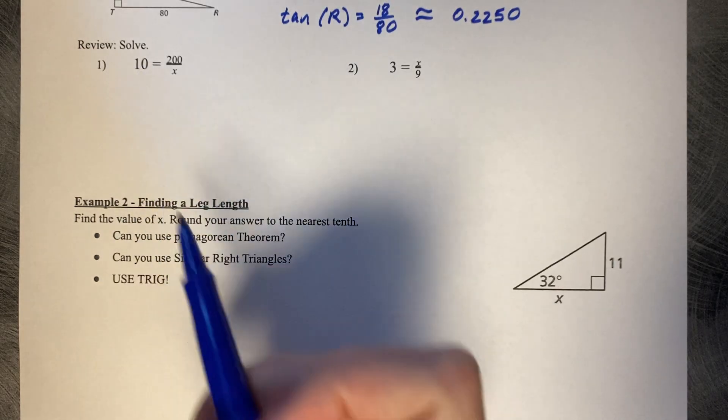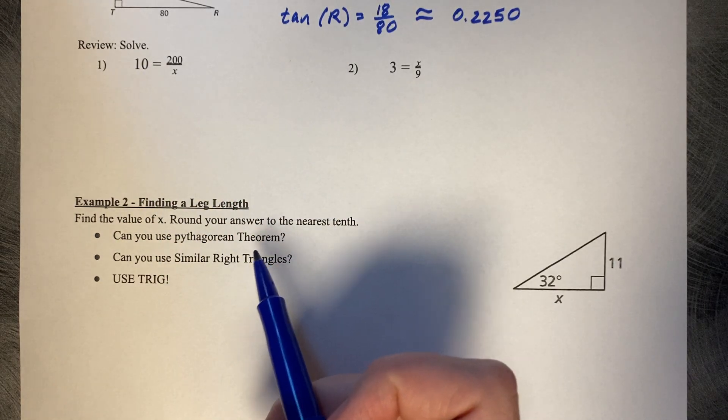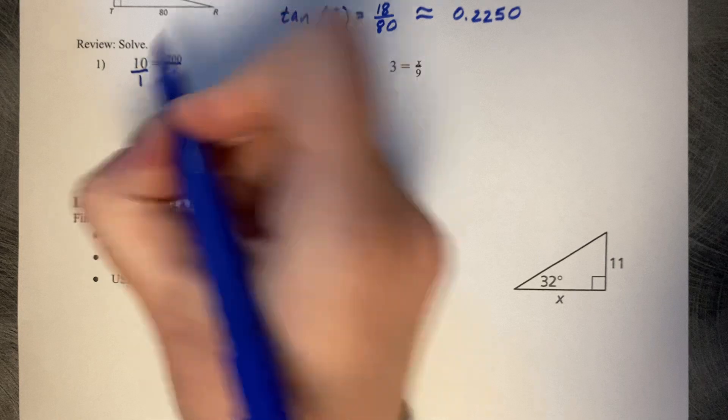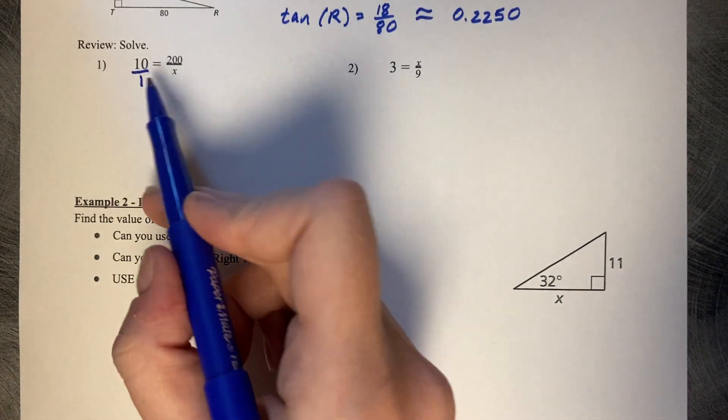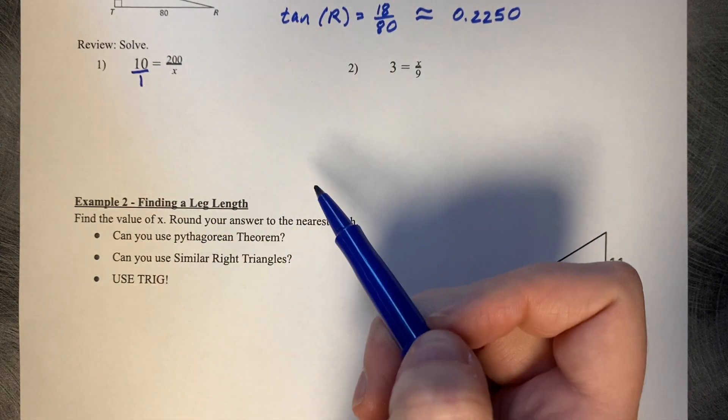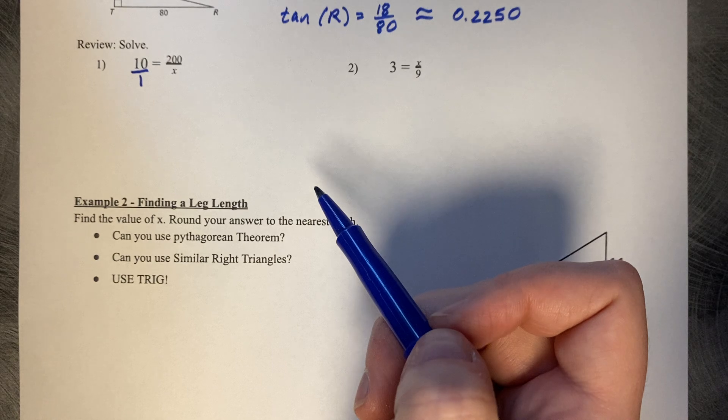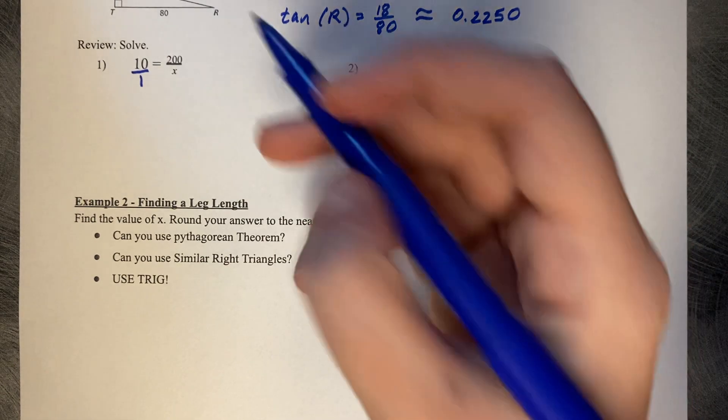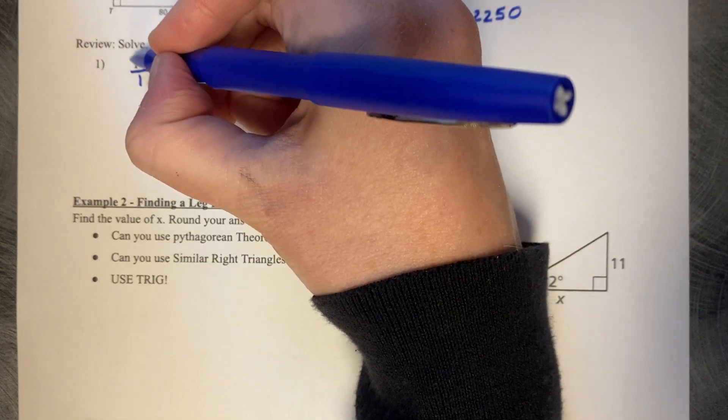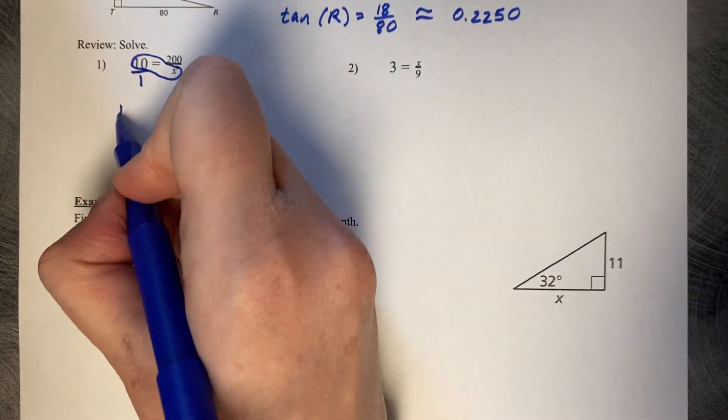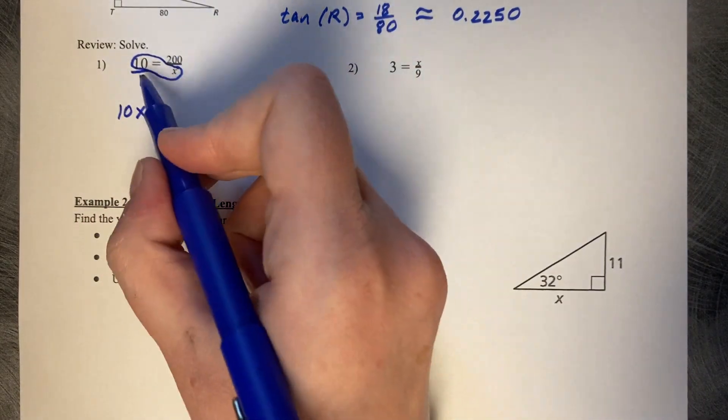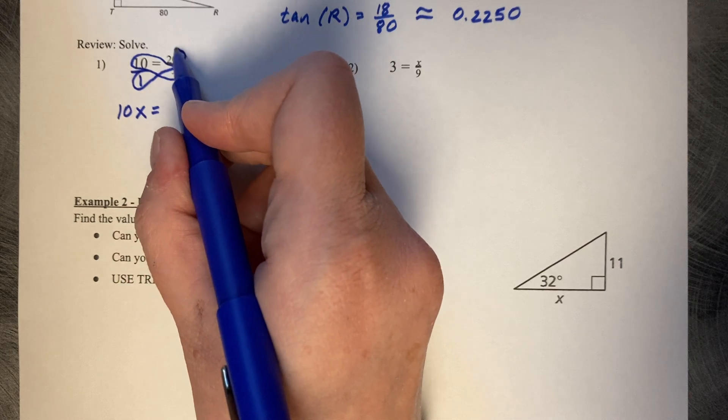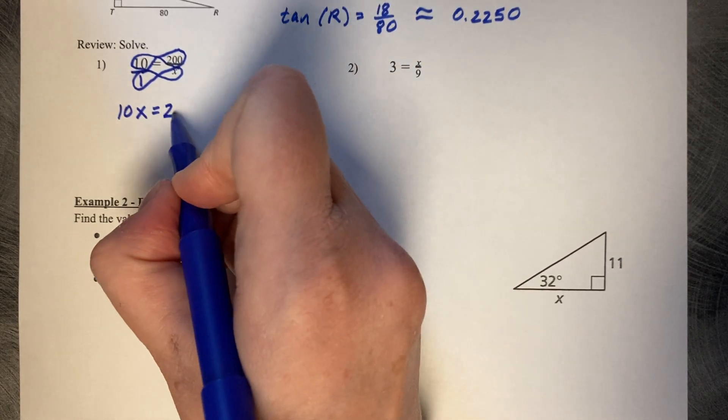Recall that if you have a whole number like 10, you can always write it over 1, which makes it a fraction equal to a fraction, which makes cross-multiplying easier. We would take x times 10 to get 10x, and 1 times 200, which is 200.